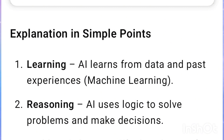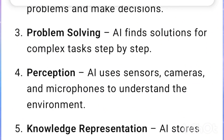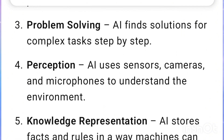Reasoning: AI uses logic to solve problems and make decisions. Problem solving: AI finds solutions for complex tasks step-by-step. Perception: AI uses sensors, cameras, and microphones to understand the environment.